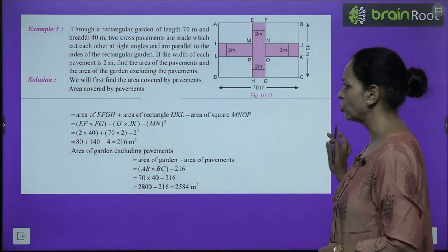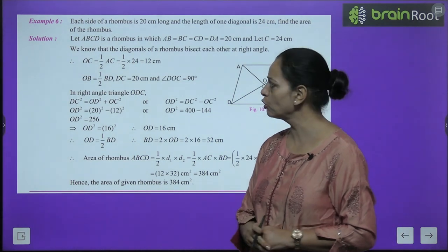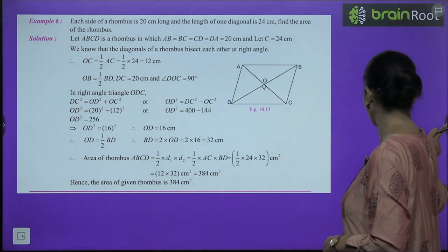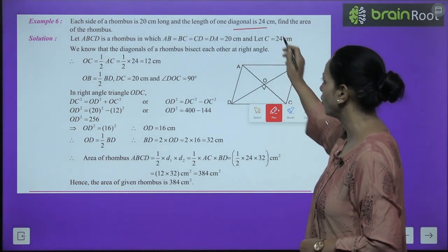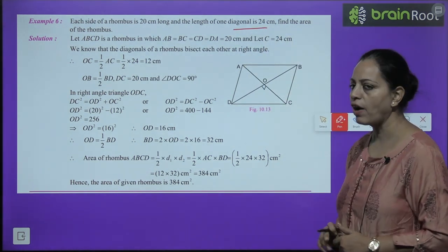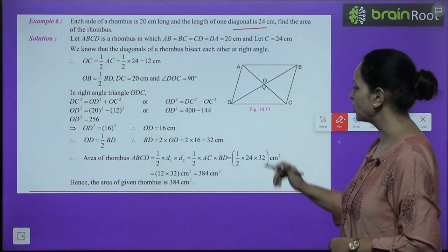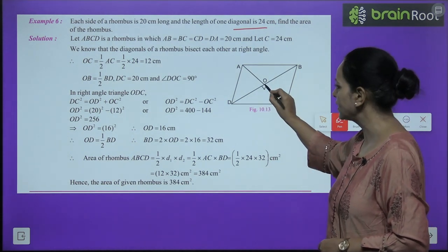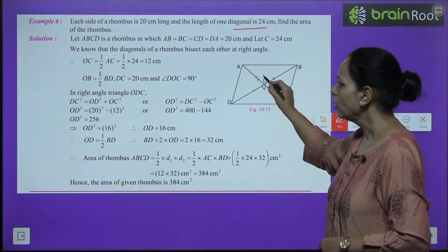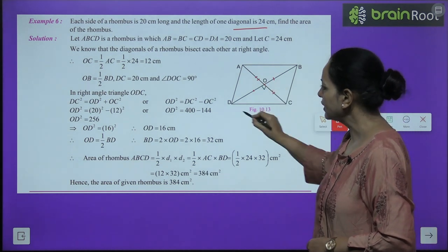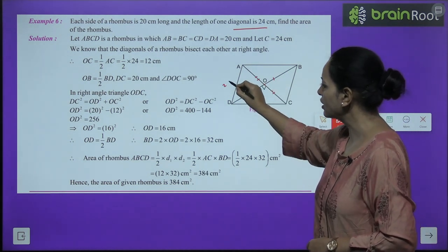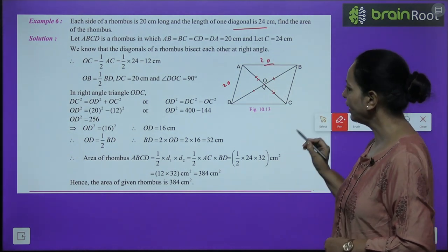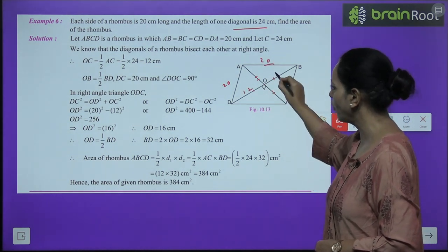Example 6: Each side of a rhombus is 20 cm and one diagonal is 24 cm. Find the area. The diagonals bisect each other, so one diagonal gives half-lengths of 12 cm each. Using Pythagoras in one right triangle: 20² = 12² + x², so 400 − 144 = 256, giving x = 16 cm. Thus the second diagonal = 32 cm.